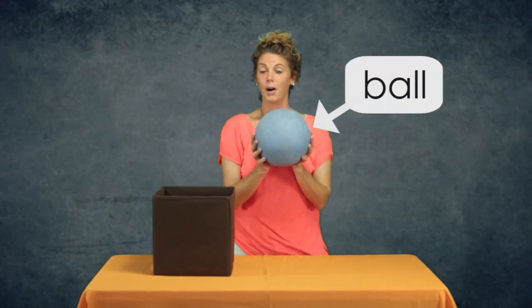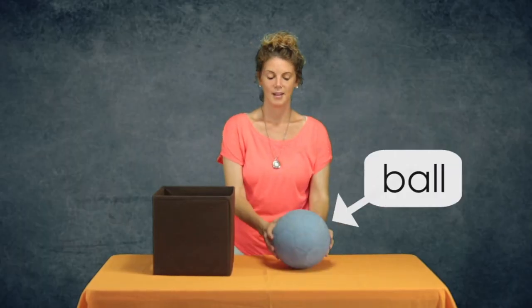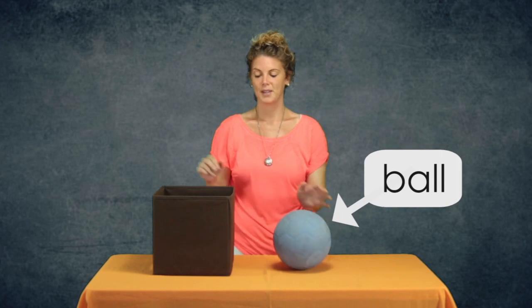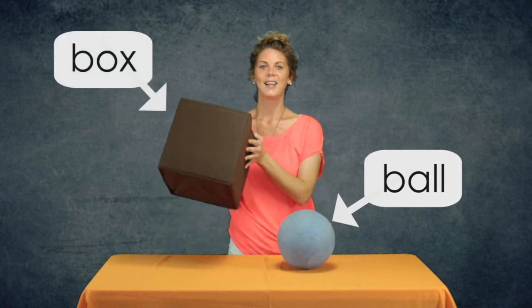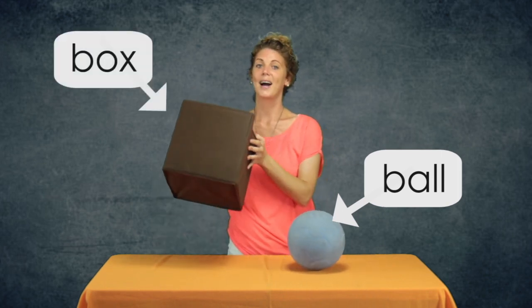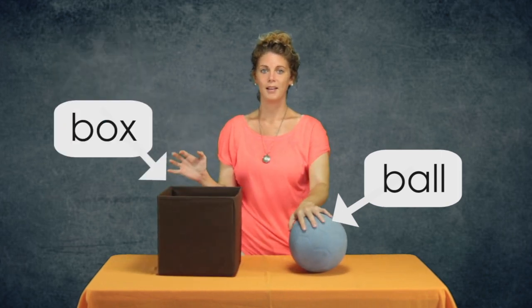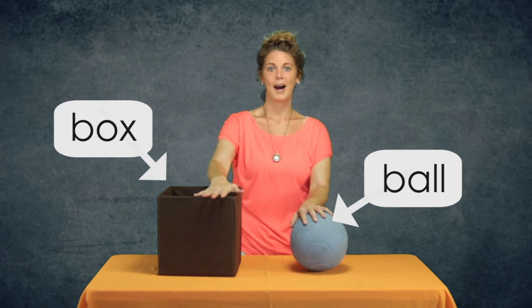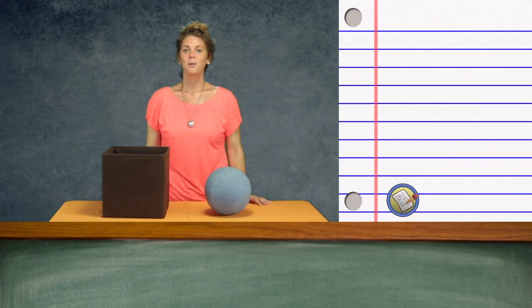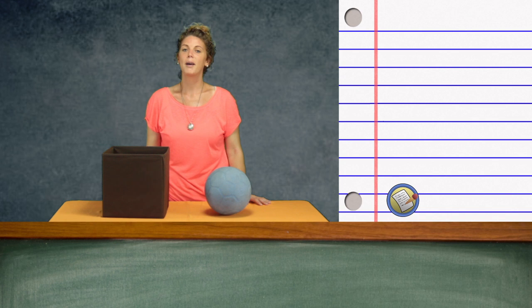In English, it relates to ball and it relates to box. Ball, box. With this, we're going to learn 8 prepositions that come in English.